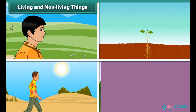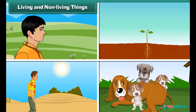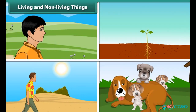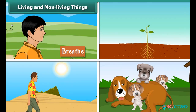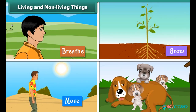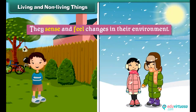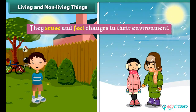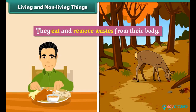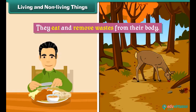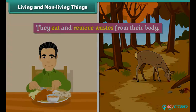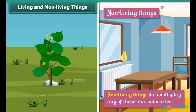Living and non-living things. Living things display the following characteristics: they breathe, they grow, they move, they reproduce, they sense and feel changes in their environment, and they eat and remove wastes from their body. Non-living things do not display any of these characteristics.